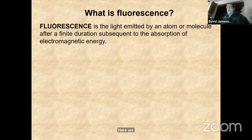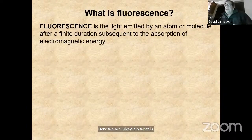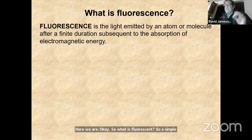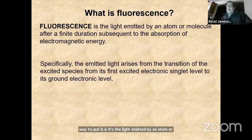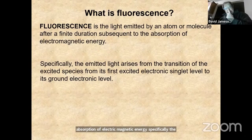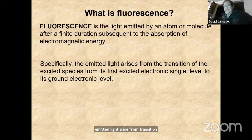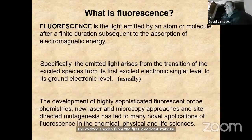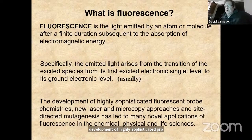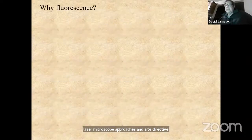What is fluorescence? A simple way to put it is it's the light emitted by an atom or molecule after a finite duration subsequent to absorption of electromagnetic energy. Specifically, the emitted light arrives from the transition of the excited species from the first excited state to the ground electronic level, usually. It's been the development of highly sophisticated probe chemistries, new laser microscope approaches, and site-directed mutagenesis that has led to many novel applications of fluorescence in the chemical, physical, and life sciences.